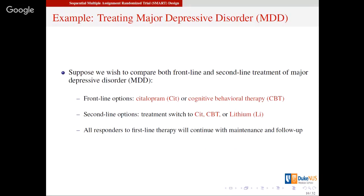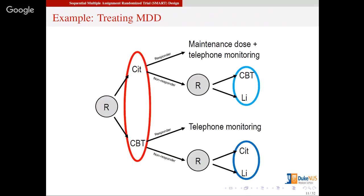Let's go through an example from depression. The goal is to compare both frontline and second-line treatment for managing major depression. The frontline treatment options are citalopram — a drug — or CBT, cognitive behavioral therapy. Then the second-stage options for non-responders are: among citalopram non-responders, either CBT or lithium; among CBT non-responders, citalopram or lithium. Responders always get usual maintenance therapy.